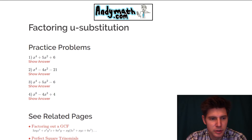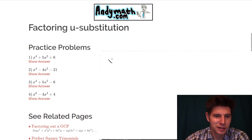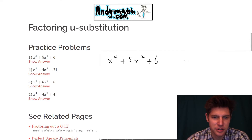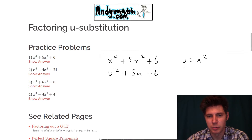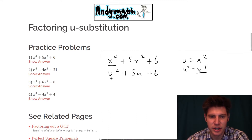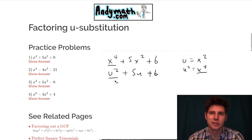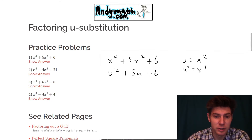We'll do maybe two of them. Let's do number one: x to the fourth plus 5x squared plus 6. So for this one, u is going to equal x squared. So that means we can rewrite this as u squared plus 5u plus 6. And if you're wondering how we got that u squared — if we square both sides, we get u squared equals x squared squared, which is x to the fourth. So that's how the x to the fourth became a u squared.